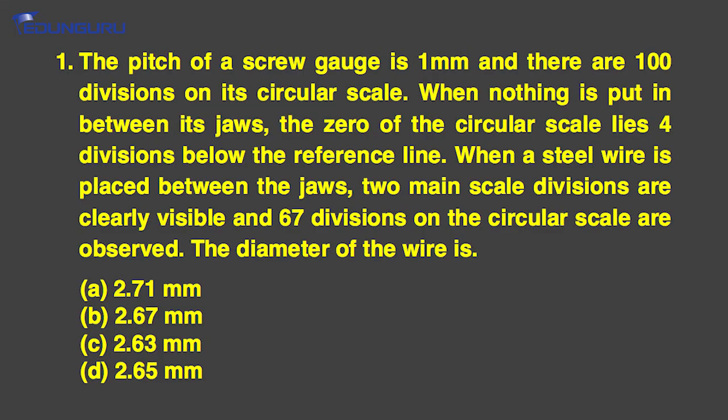The pitch of a screw gauge is 1 mm and there are 100 divisions on its circular scale. When nothing is put in between its jaws, the zero of the circular scale lies 4 divisions below the reference line. When a steel wire is placed between the jaws, two main scale divisions are clearly visible and 67 divisions on the circular scale are observed. The diameter of the wire is: option A — 2.71 mm, option B — 2.67 mm, option C — 2.63 mm, and option D — 2.65 mm.